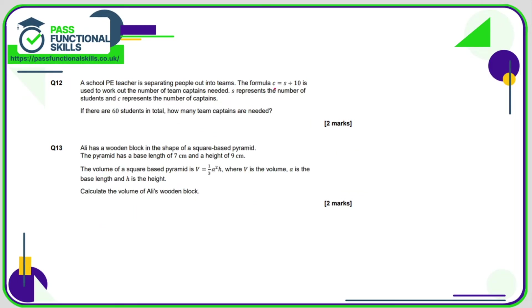So we're using the formula c = s ÷ 10. If s is the number of students, then here we're just dividing 60 by 10, so team captains will be simply 6.